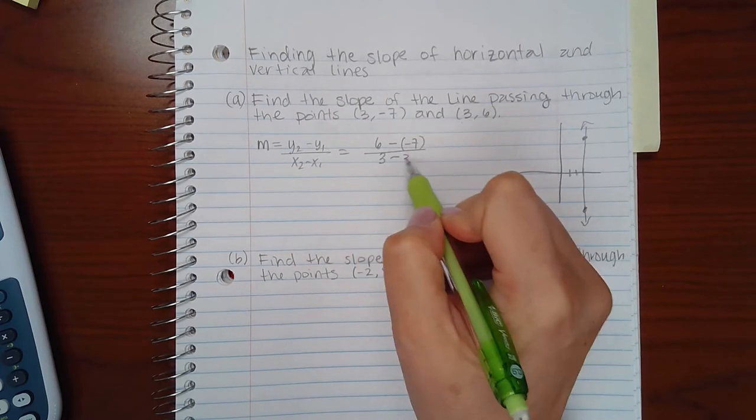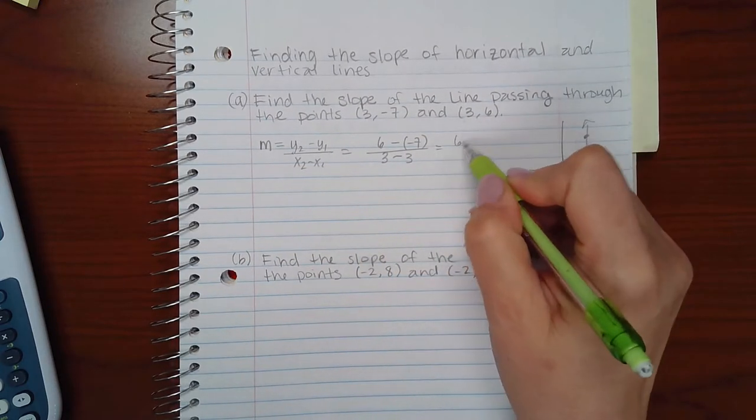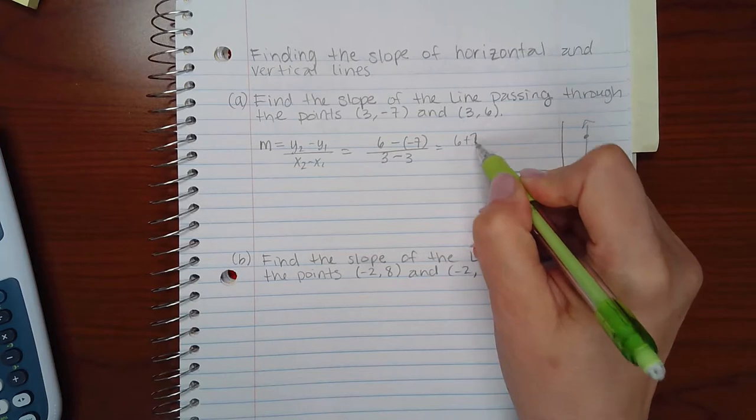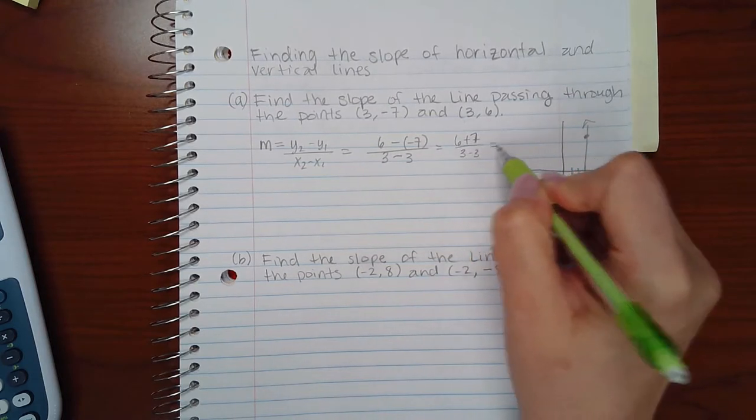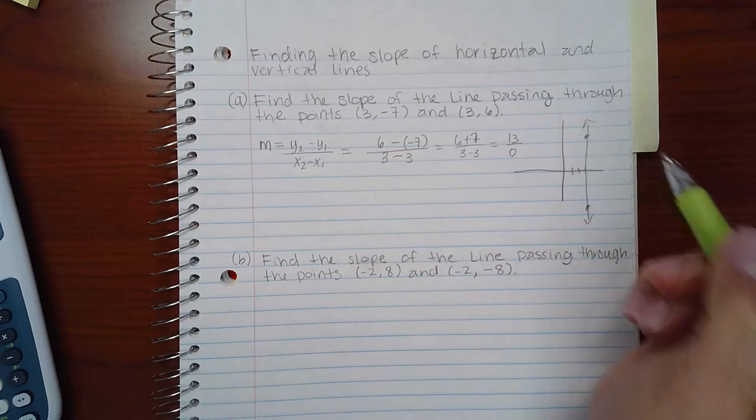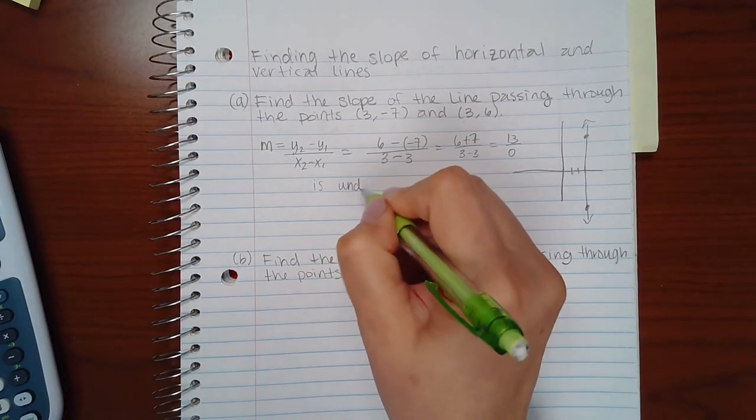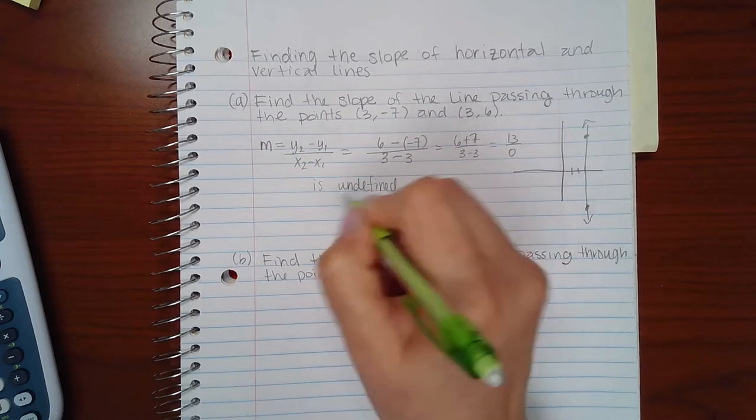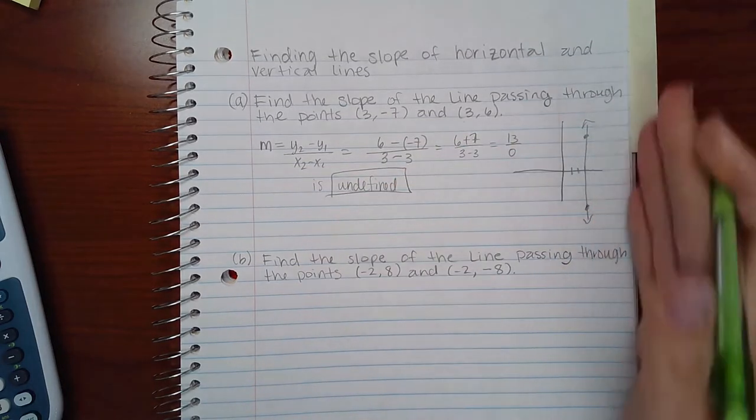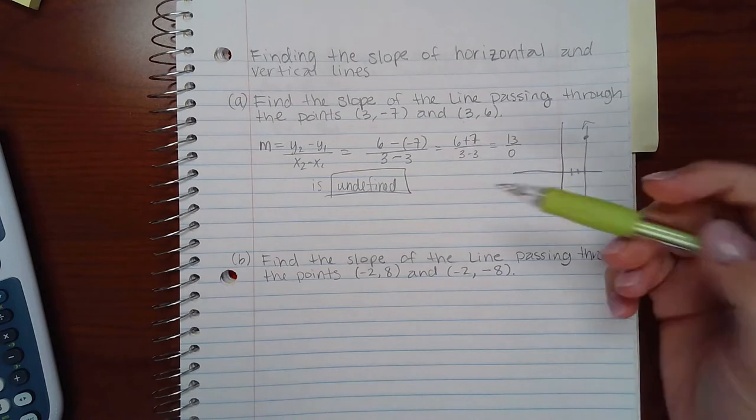You get 6 plus 7 over 3 minus 3 or 13 over 0. Any number over 0 is undefined, so the slope of a vertical line is undefined.